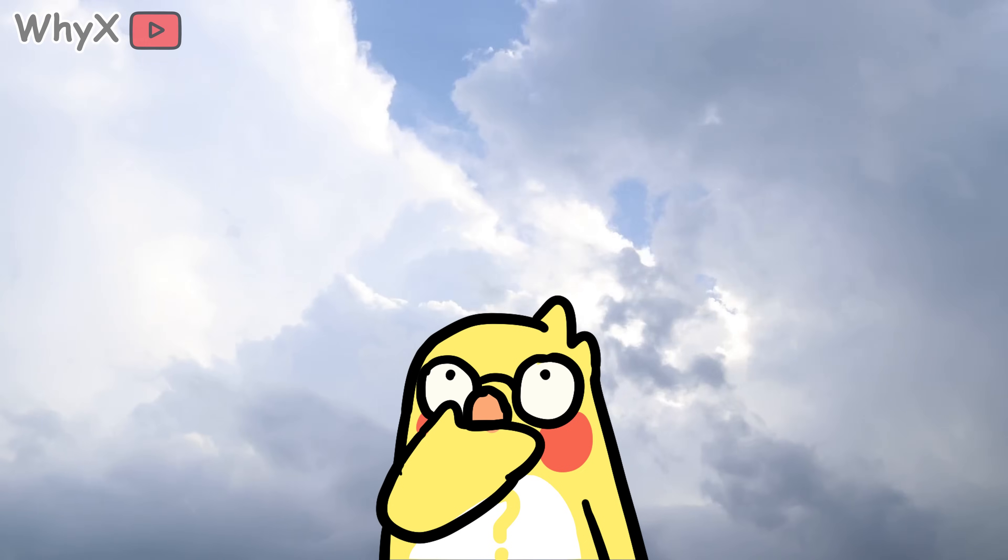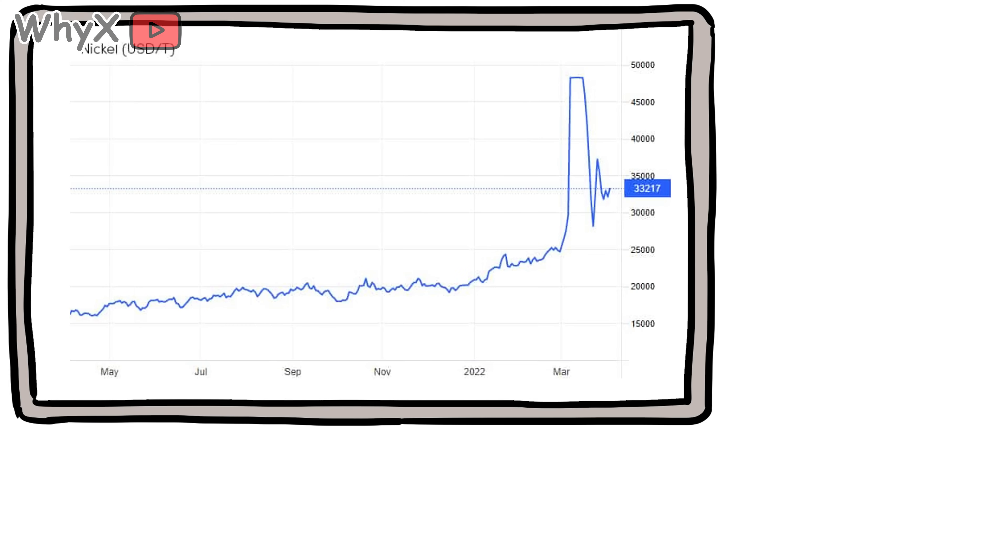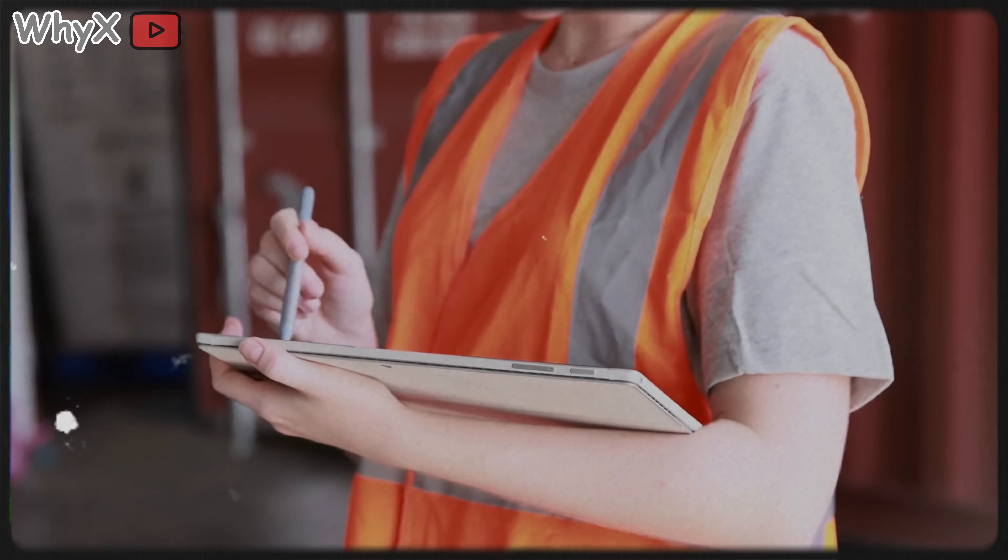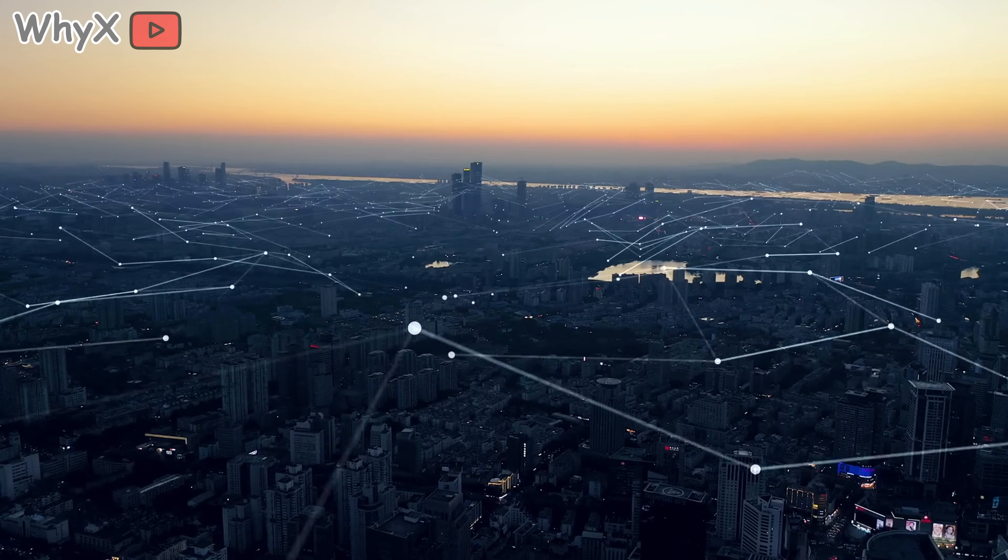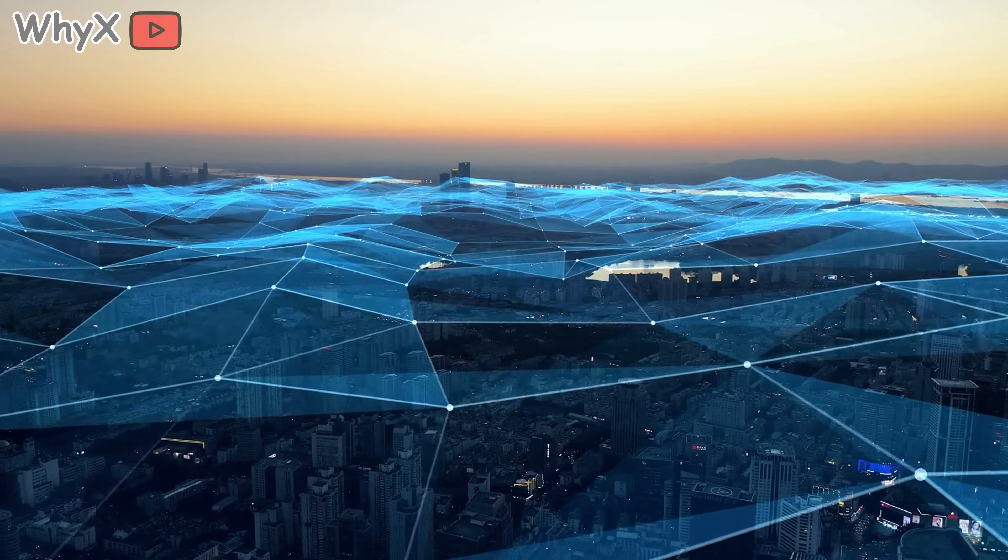Why it matters to you. You might be thinking, cool science lesson, but how does this affect me? Well, imagine this. A sudden spike in nickel prices could make electric cars thousands of dollars more expensive. A cobalt shortage could delay smartphone releases. A political dispute halfway around the world could mean your next laptop takes six months longer to ship. In a world that runs on batteries, metal supply chains are not just background noise, they are the heartbeat of modern life.